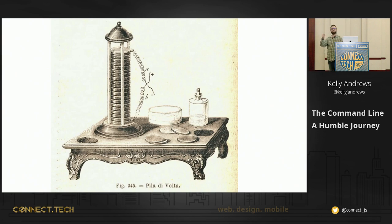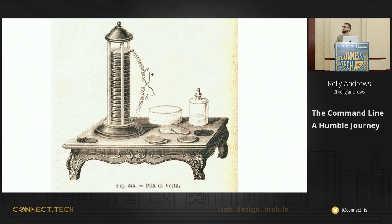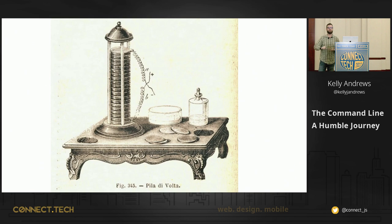What Volta did was he took saline-soaked rags and sandwiched them between stacks of copper and zinc. That eventually became known as the Voltaic Pile, which is a battery. He was literally able to produce a constant source of electricity, and he published those experiments in 1799. Maybe I'm stretching a bit going this far back, but without electricity we would never have had a computer, a CLI, none of that.